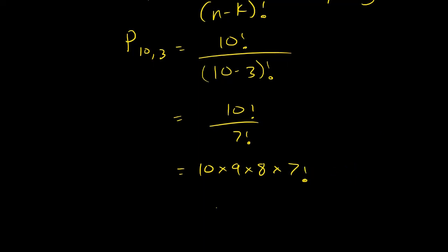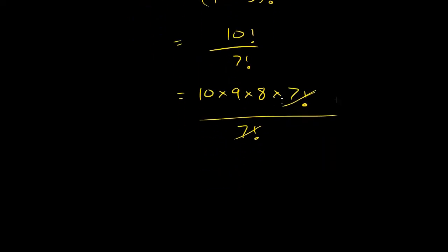And then I have 7 factorial. So you're always going to have some sort of cancellation. And your answer here is going to be 10 times 9 times 8. 10 times 9 is 90. 90 times 8 is 720.